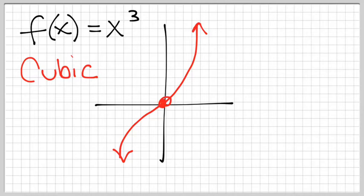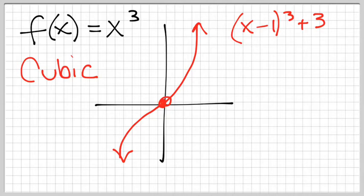We've already talked about if I were to change this and maybe made it x minus 1 cubed plus 3, we know that would move the critical point to the right one and up 3.